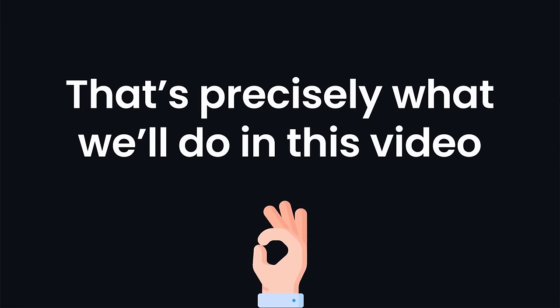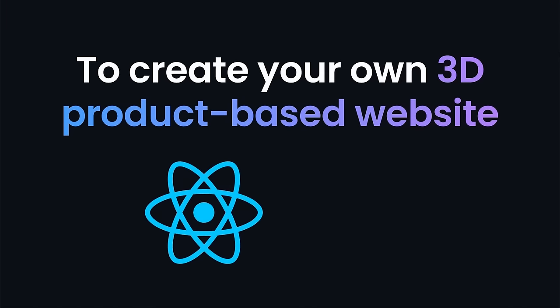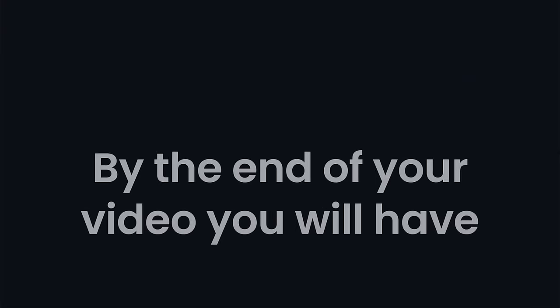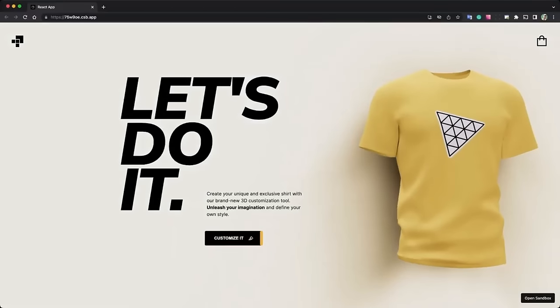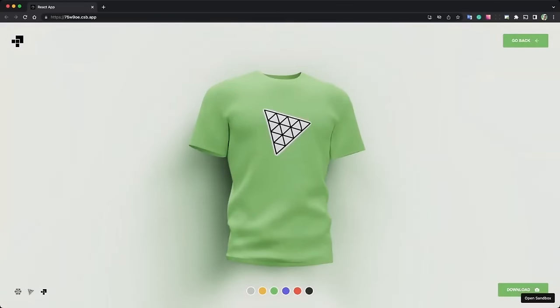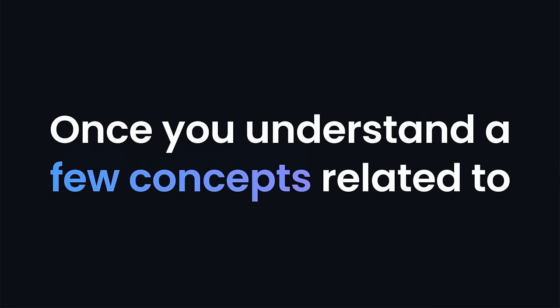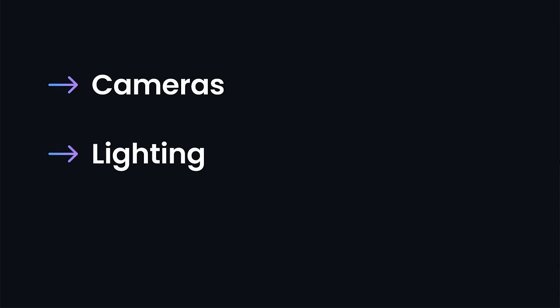That's precisely what we'll do in this video. You'll learn to create your own 3D product-based website in React using 3JS. By the end of this video, you will have built and deployed a product-based t-shirt website that is so impressive it is guaranteed to give you a job. You might be shocked at how easy it really is once you understand a few concepts related to cameras, lighting, and geometry.